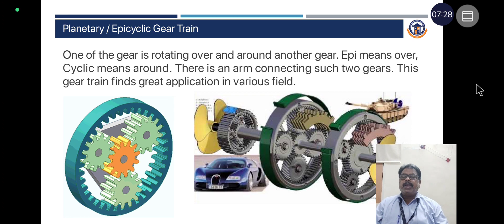Coming to planetary or epicyclic gear train: When one gear rotates over and around another gear, it is called an epicyclic gear train — 'epi' means over, 'cyclic' means around. There is an arm connecting such two gears. This gear train finds great application in various fields. Here is one example of an epicyclic gear train.